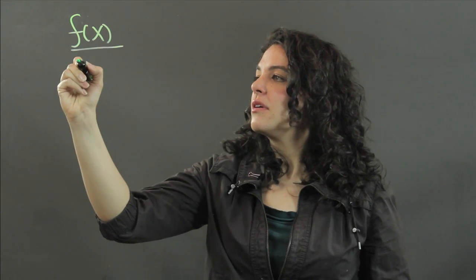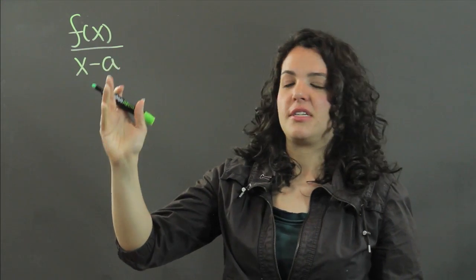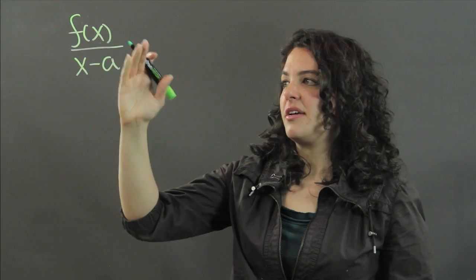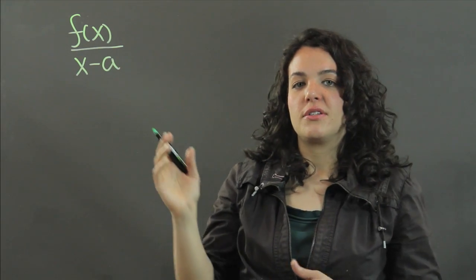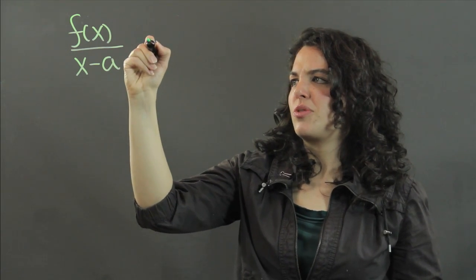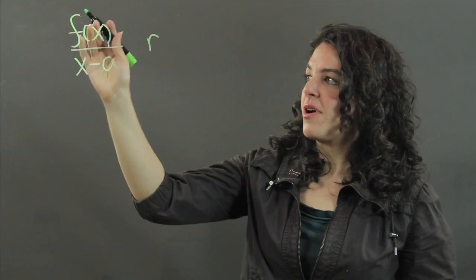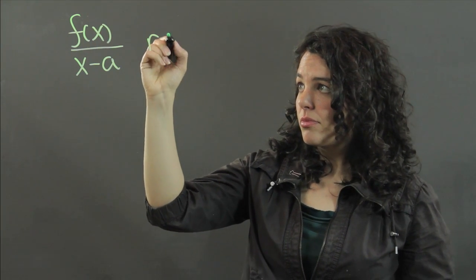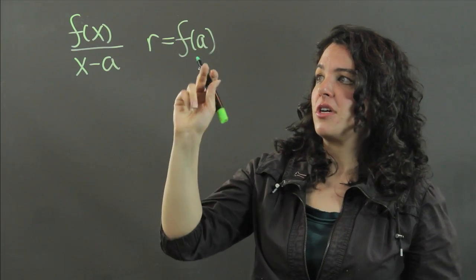The remainder theorem basically states that if we have some function f(x) and we have this linear divisor x minus a, so f(x) divided by some x minus a gives us a remainder r. This remainder that we get from taking this division gives us the value of the function at a.